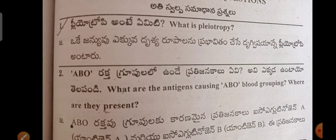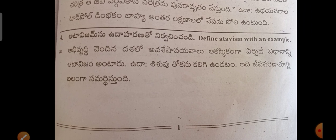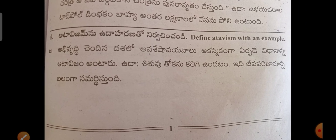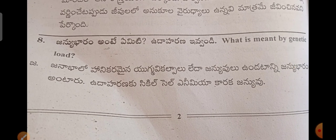PLEOTROPHY — What is PLEOTROPHY? This is a very important question. ATAVISM — Define ATAVISM with examples. In the last question: What is meant by genetic load? This is a very important question.